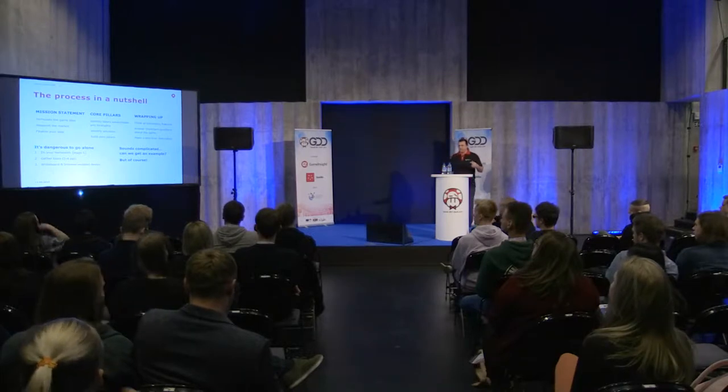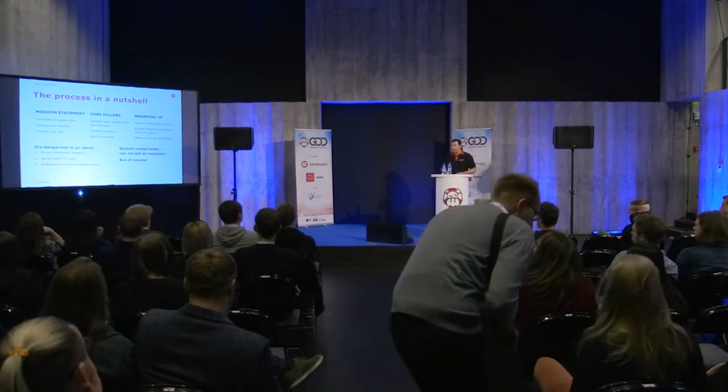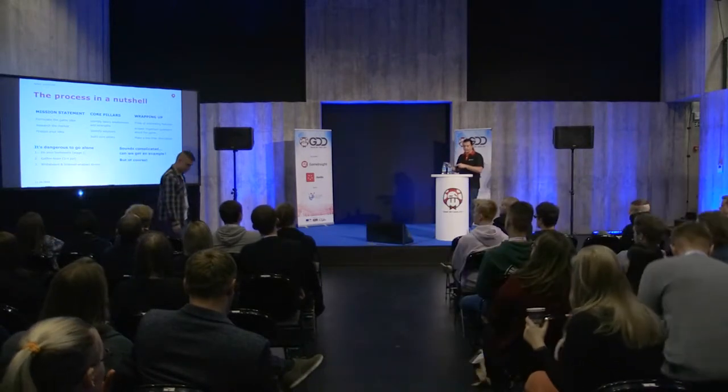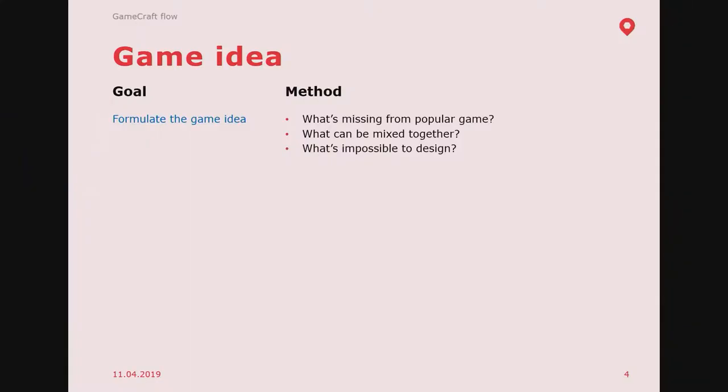That sounds complicated and doesn't really feel tangible without an example, so we have one — created specifically for this presentation to see if it's possible to do it from scratch, without making any artificial solutions. So, first step: game idea. You have to formulate a game idea. If you lack one, you can think of a popular game you love — like PUBG — and ask what's absent from it. Or mix two favorite games together. Or think of what's impossible to design — a game not suitable for its platform — and ask: maybe, just maybe, it's possible.